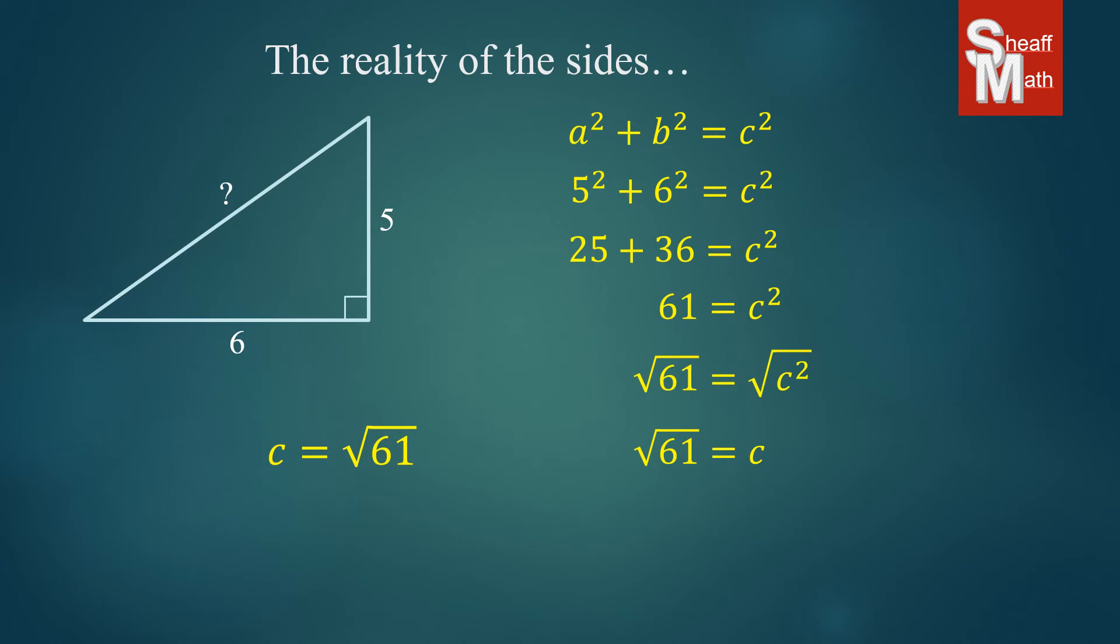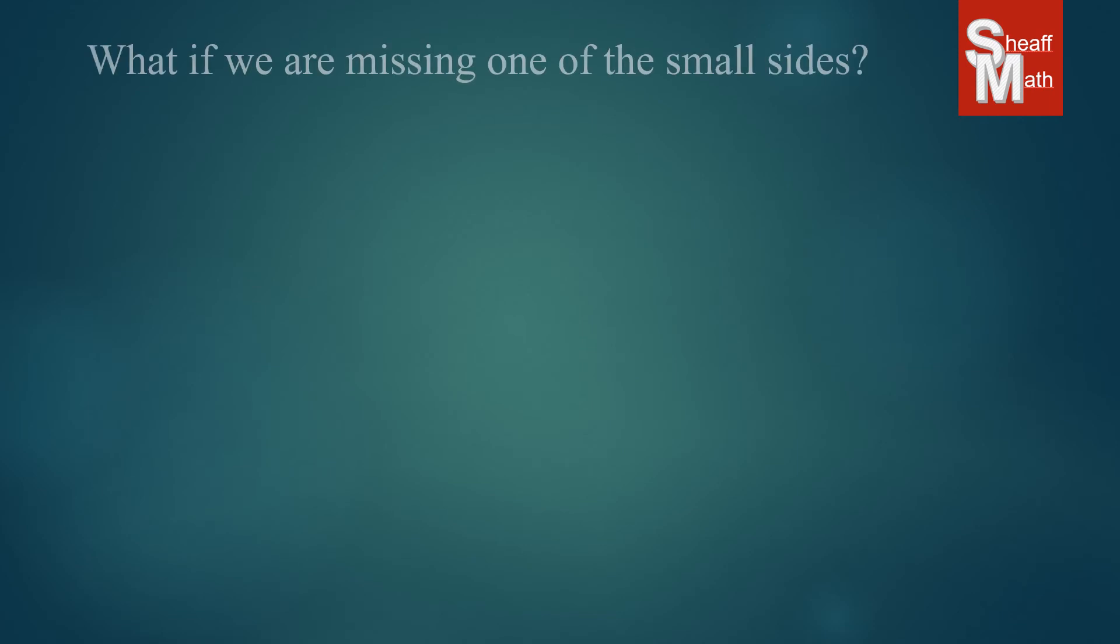Now, some teachers like you to put that into the calculator and give an approximate answer, maybe round it. And so I did that, and I got C is approximately 7.81. I rounded it to the 100th place. And if you look up at the triangle, you can see that 7.81 makes a lot more sense than square root 61. We just don't think about it in those terms. And so your teacher will tell you which way they want the answer, whether it's going to be in a radical form, simplest radical form, or approximate form. And that's the little approximate sign, the little squiggly equal sign.